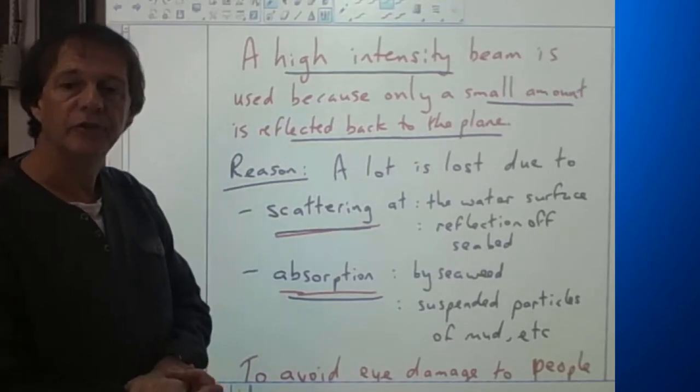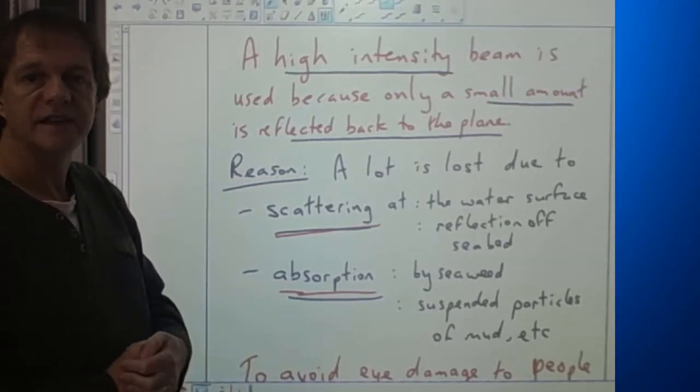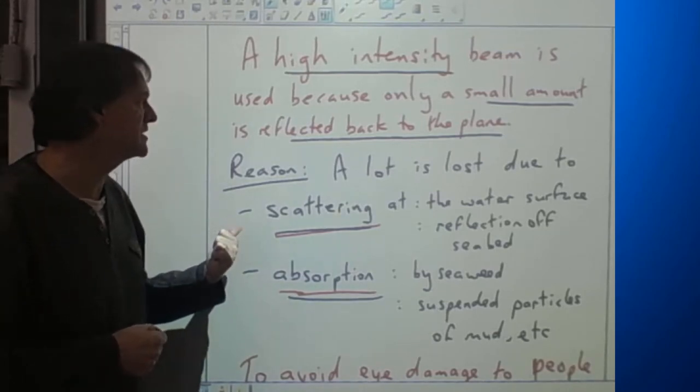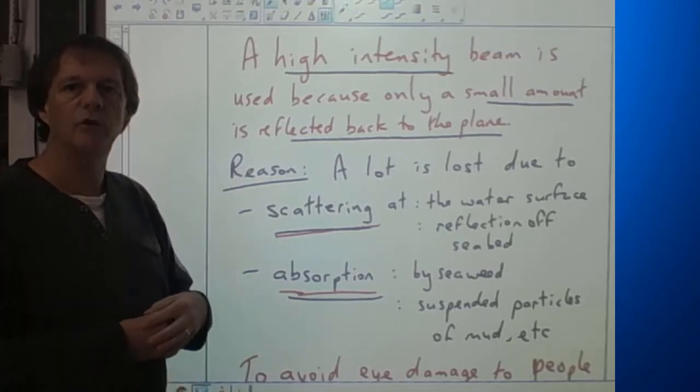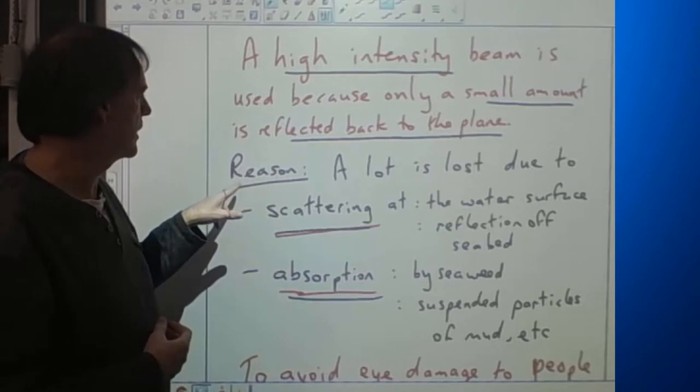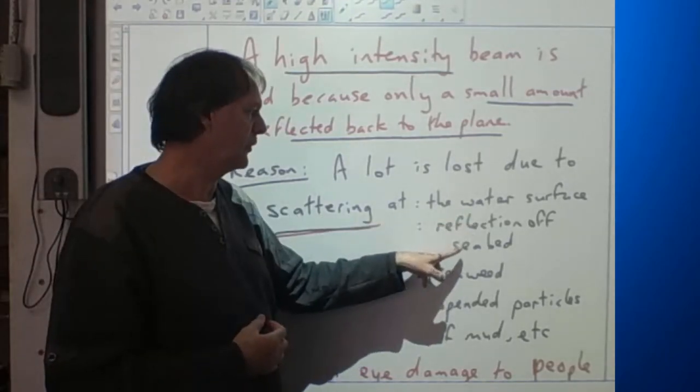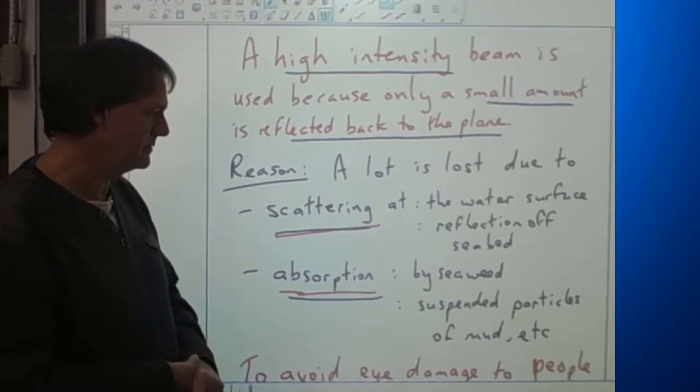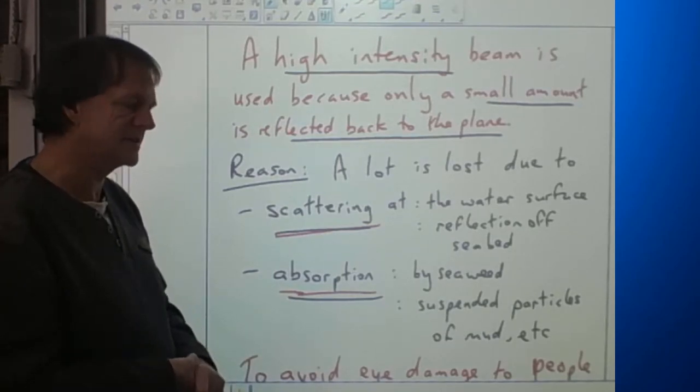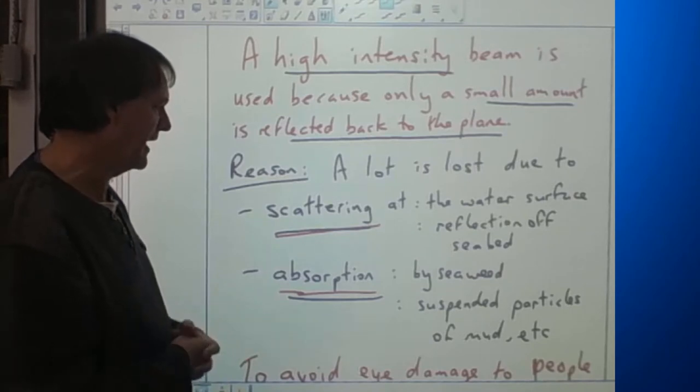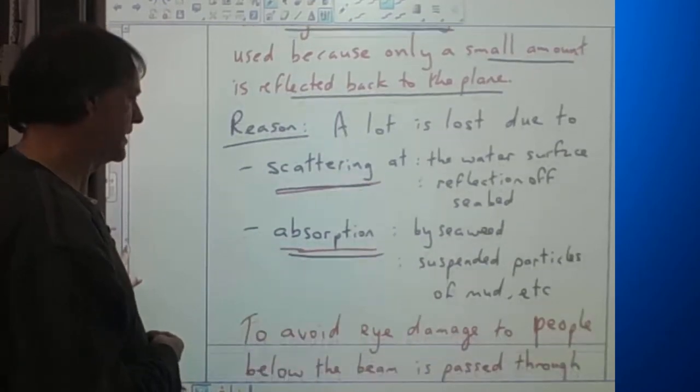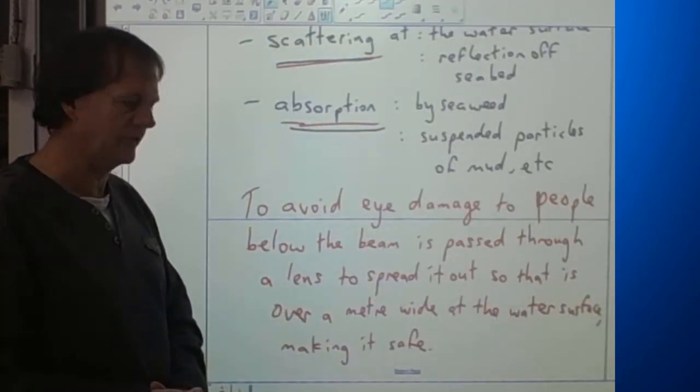The other part of the syllabus is why does it use a high-intensity beam? A high-intensity beam needs to be used because we need to get a small amount reflected back to the plane and you get an awful lot of loss due to scattering off the water surface and also off the seabed where it spreads, and you'll get some absorption incurred by suspended particles. To avoid eye damage to people, the beam is spread through a lens so it is actually really wide when it hits the surface.